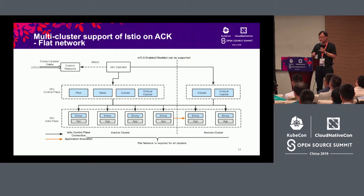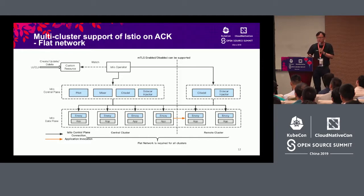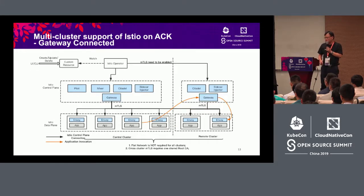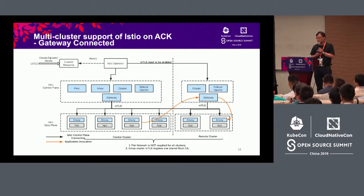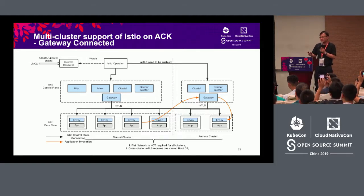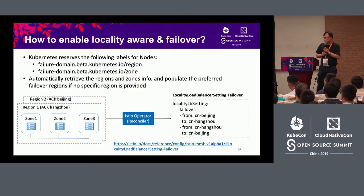The operator can manage Istio together, including lifecycle management. In the past, using the community version to install and update caused many problems. Now, using our operator, you can upgrade Istio smoothly. For backward compatibility, we've extended a lot. If two clusters are not directly connected and can only communicate through the common internet, we can use a VPN method to connect them. With the community version, there are very complicated parameters involved — but with our operator, you don't need to worry about that anymore.